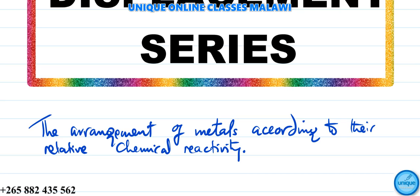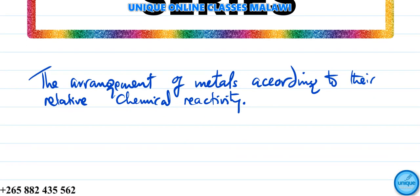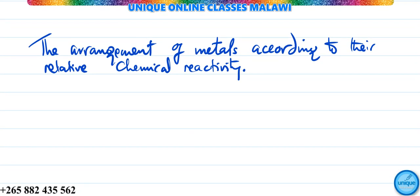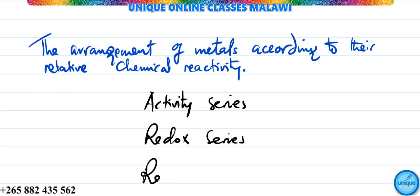You can also say arrangement of metals according to their ability to displace other metals. In some textbooks, this is called activity series, redox series, or reactivity series.